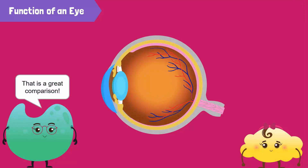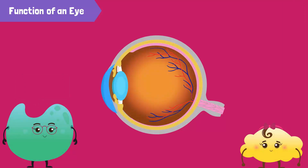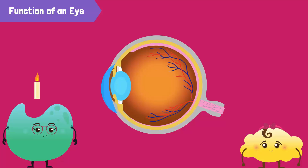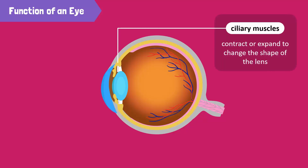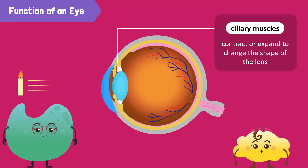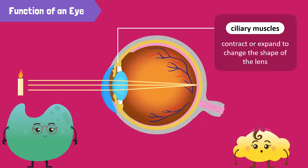That is a great comparison! Our eyes also focus on objects that are near and far, but they do so by changing the shape of the lens, not moving it. In our eye, the lens is held in place by ciliary muscles. These muscles contract or expand to change the shape of the lens. This allows images to form at the back of the eye.